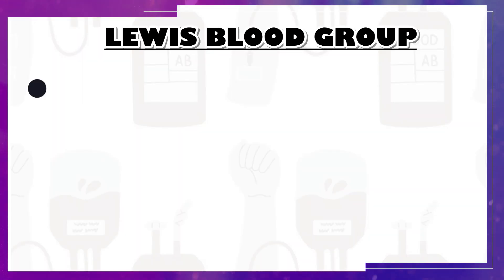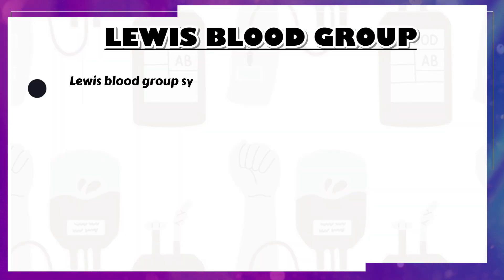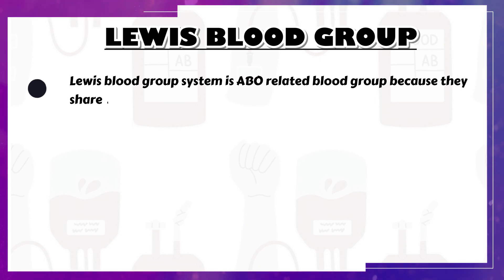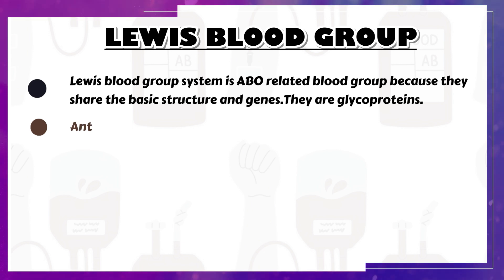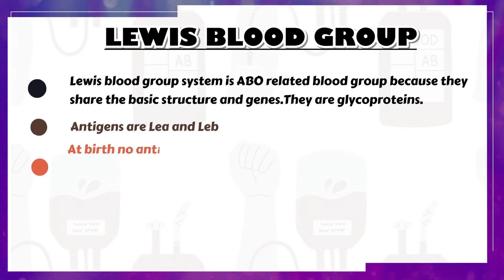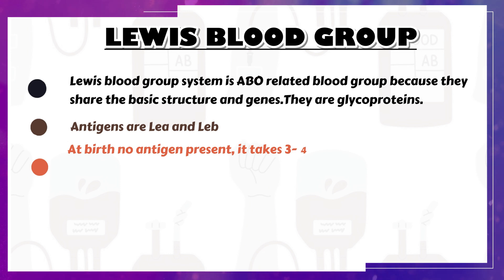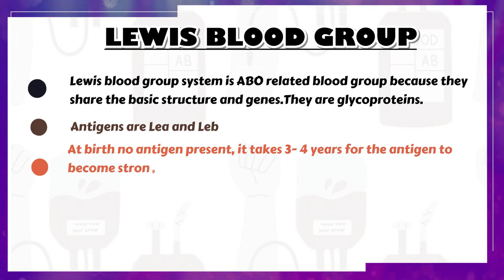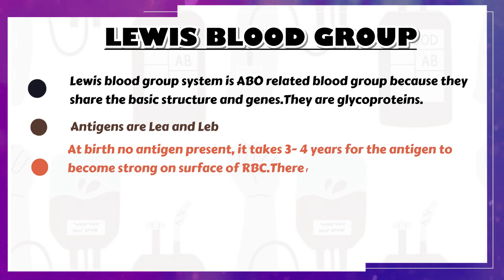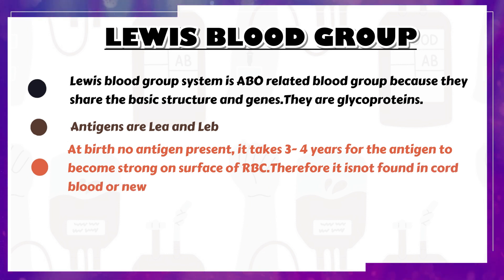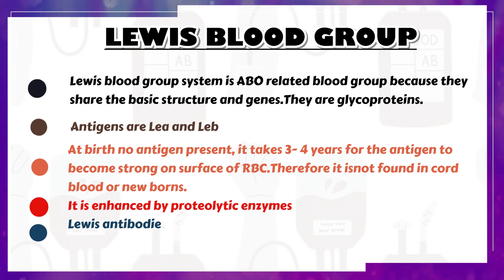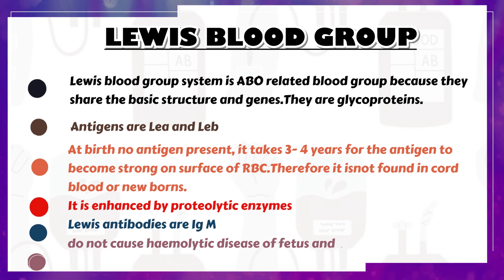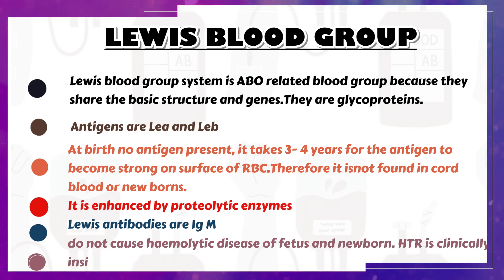Recap. The Lewis Blood Group System is ABO-related because they share basic structure and genes. Antigens are glycoproteins; the primary antigens are Le-a and Le-b. At birth no antigen is present — it takes 3 to 4 years for antigen to become strong on the RBC surface, so it is not found in cord blood or newborns. Lewis antigens are enhanced by proteolytic enzymes. Lewis antibodies are generally IgM, do not cause hemolytic disease of the fetus and newborn, and HTR is clinically insignificant.